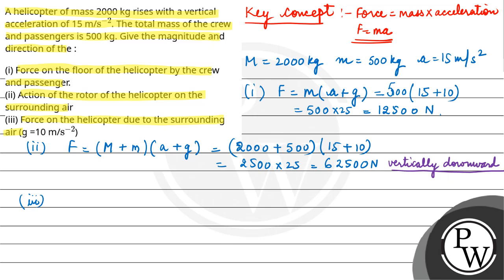Third is force on the helicopter due to surrounding air. Now this is a reaction, reaction on helicopter. This will be equal to the same value, so this is also equal to 62,500 newton. The only difference is that it is acting vertically upward.